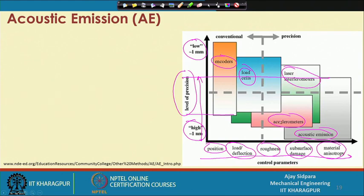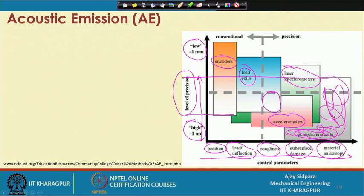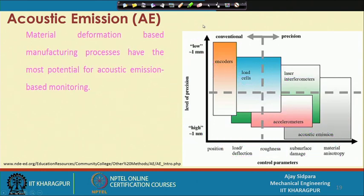There are areas of overlap between different measurement systems, which can be very useful. If you look at a particular area — other than acoustic emission sensor and load cell — all three systems are actually useful. You have to select the system which is more reliable and suitable for your application. But this particular area is mostly dominated by the acoustic emission part, giving it a very strong demand as a reliable measurement system at micro scale.